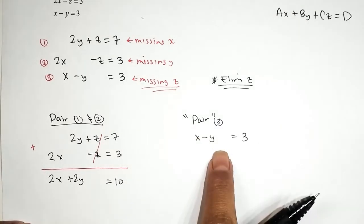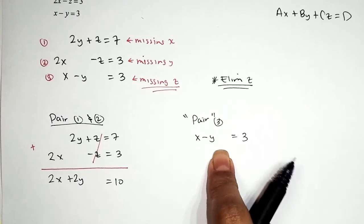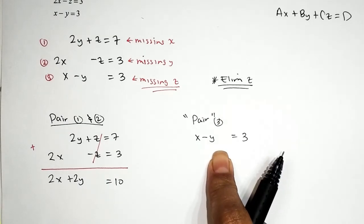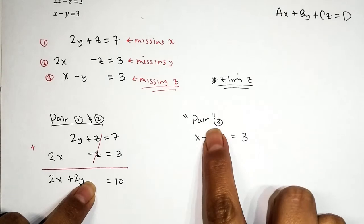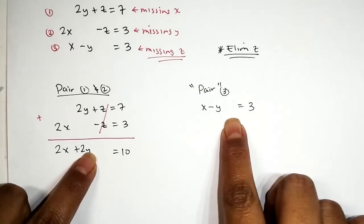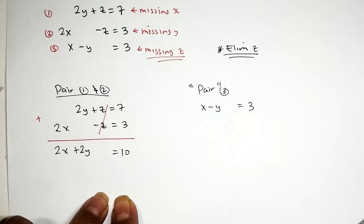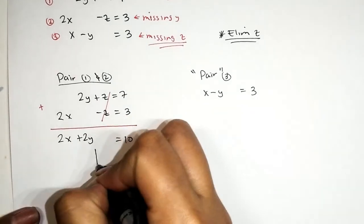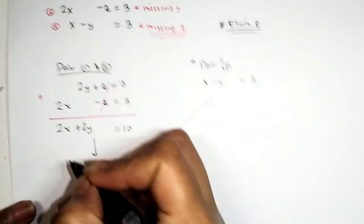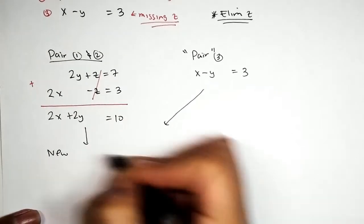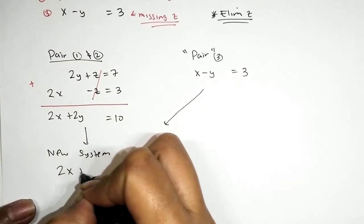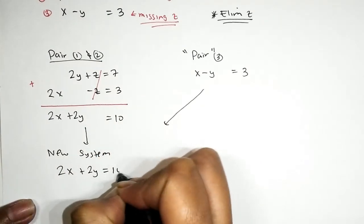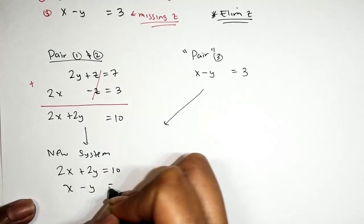Looking at the first pairing, the coefficients on the Z term are already opposite, so we have the green light to add the equations. Adding in a vertical column format leaves us with 2X + 2Y, the Z's cancel giving 0, and the sum of the constants gives us 10. So we get 2X + 2Y = 10. The Z is eliminated. Now we join our new equations to create a new system.